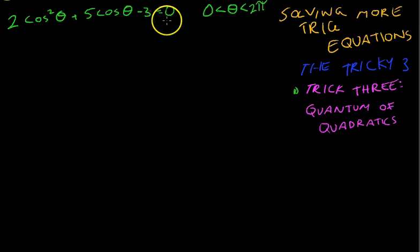Now there's a bit of a spoiler in the name here, Quantum of Quadratics. This is essentially a quadratic equation. You can see that there's a squared variable here, the variable itself, and then a constant, and it's all equal to 0.